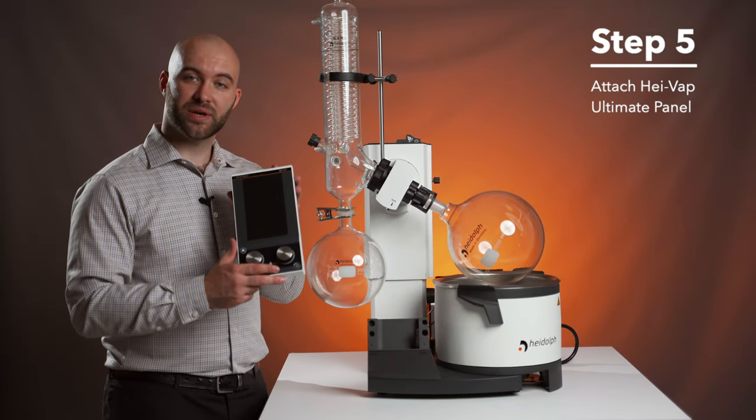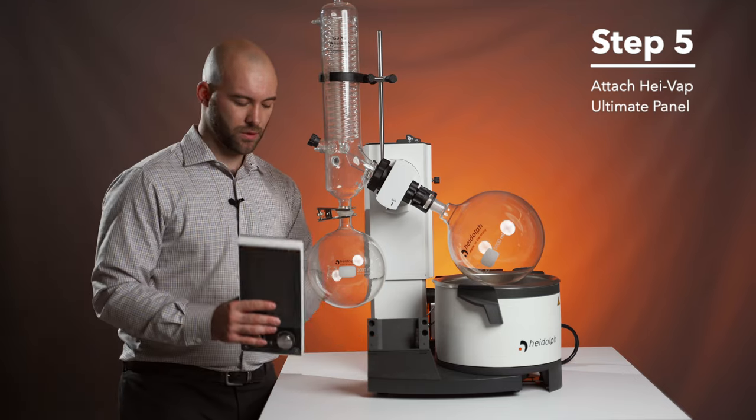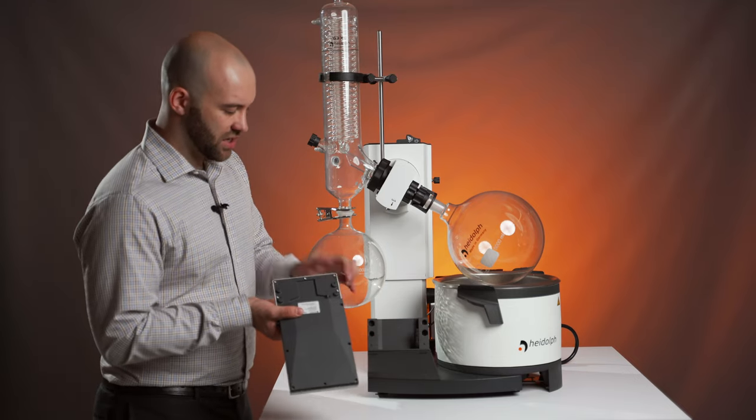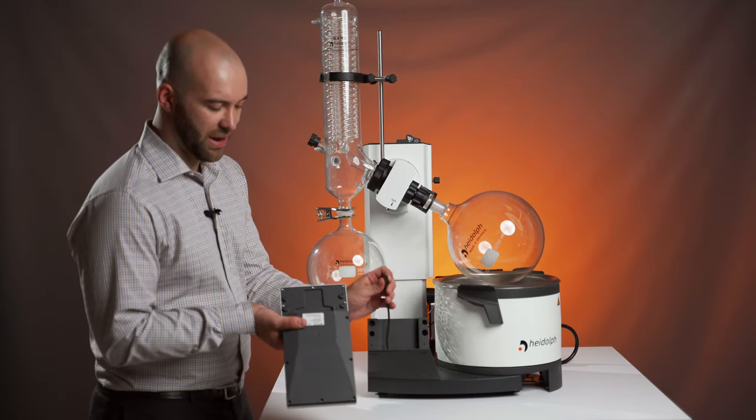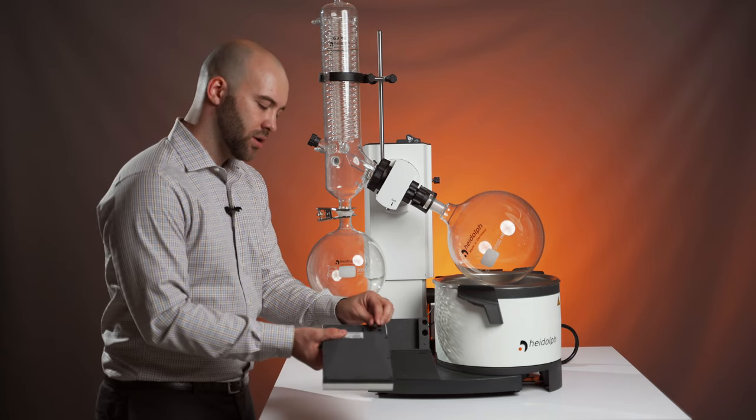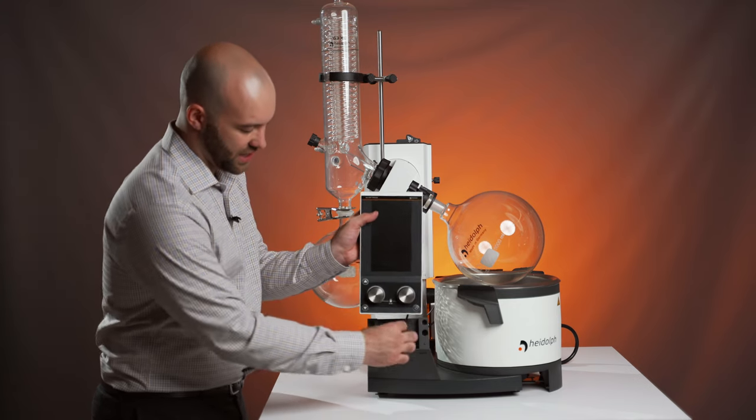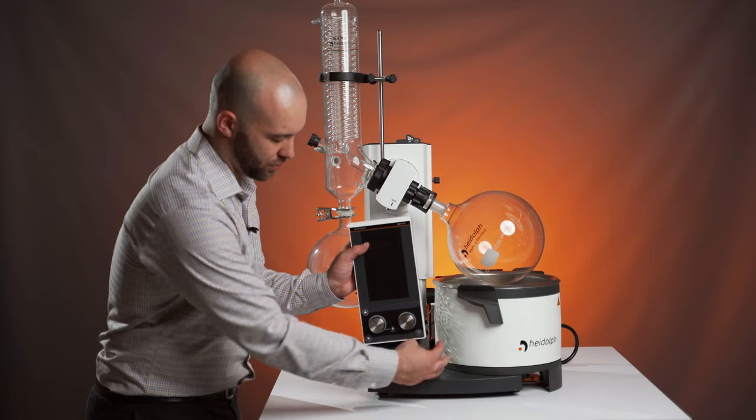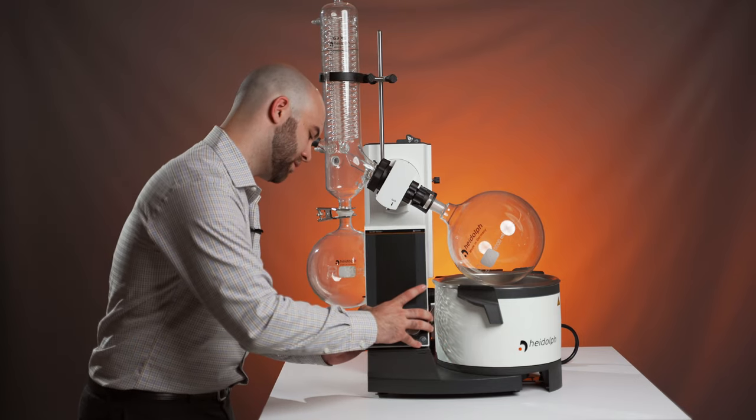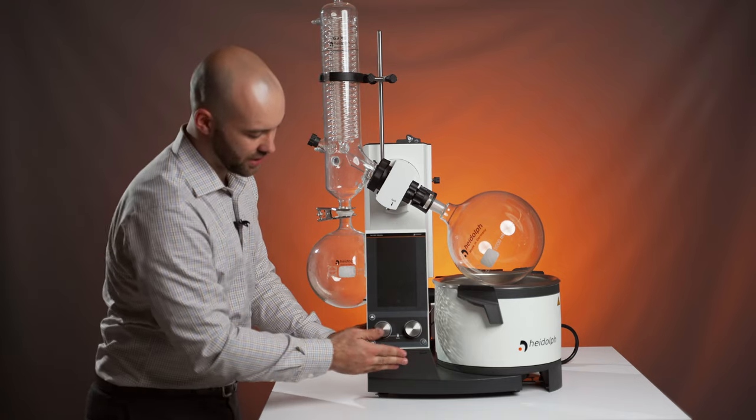Step five, we're going to attach our HiVap Ultimate panel to our HiVap. You're going to see a white notch on the back of the panel and the white notch on the cable on your HiVap. They're going to slot into each other to connect and you're going to slide this cable back down through the hole. Line up the four slots and push down until you hear a click.